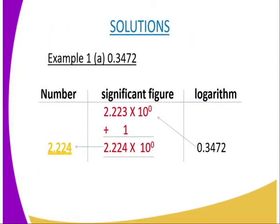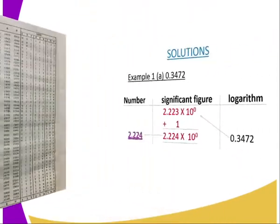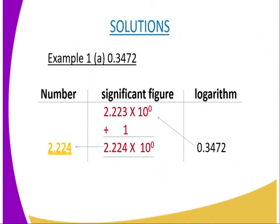In this example we have 0.3472. We have a column of anti-logarithms here. This number 0.3472 has four significant figures. The table is written in standard form, correct to four significant figures. You are supposed to go to the anti-logarithm column.